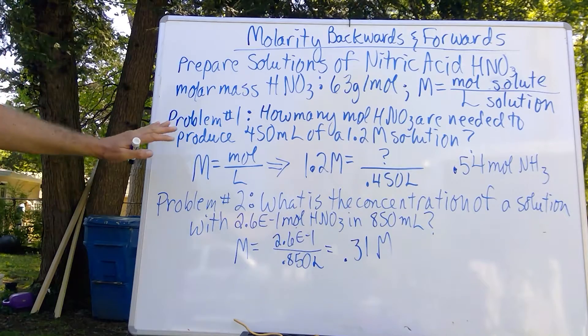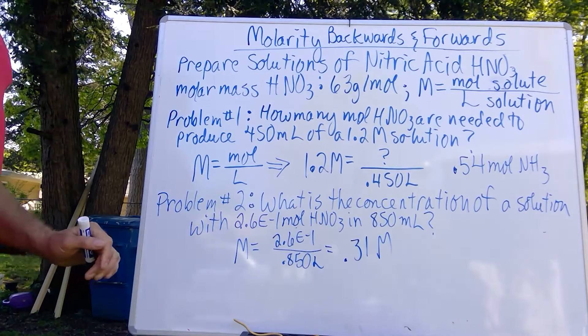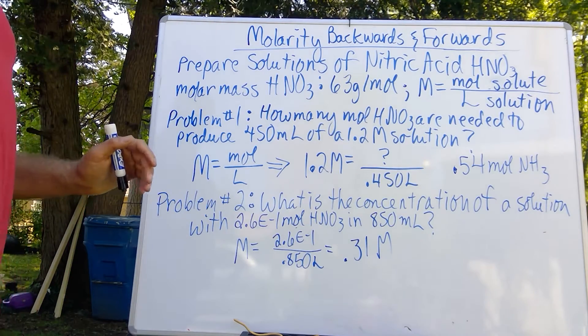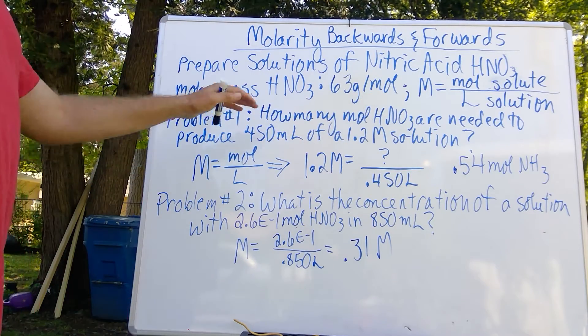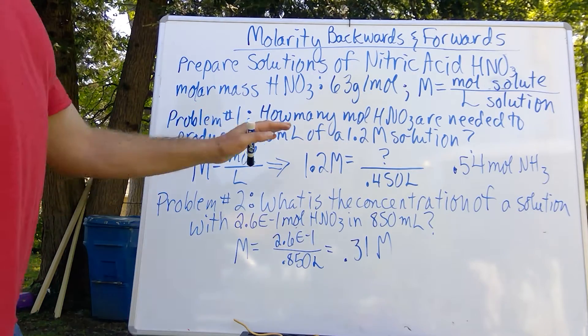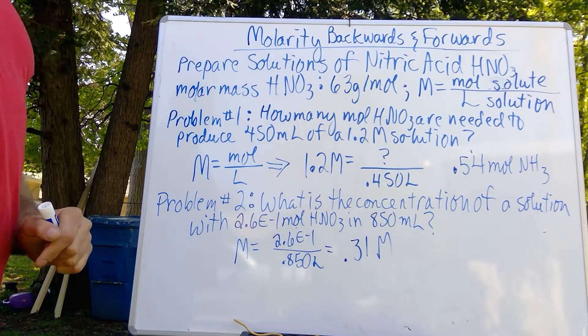So let's take a look at two problems here. So the first one, problem one: how many moles of nitric acid are needed to produce 450 milliliters of a 1.2 molar concentration?